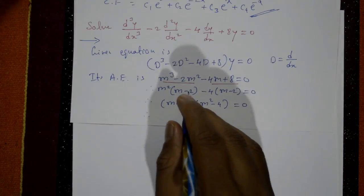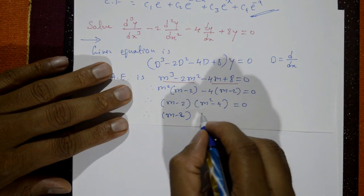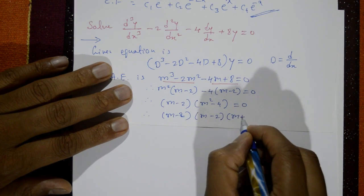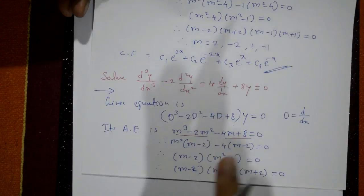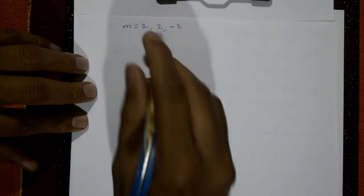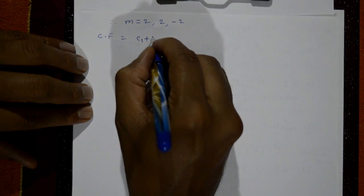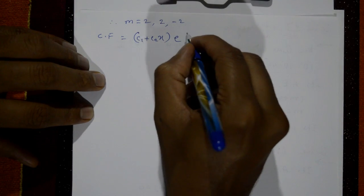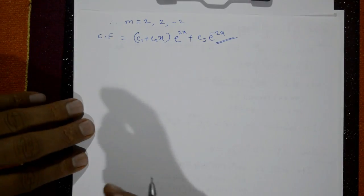Therefore, applying the a²−b² formula to (m² minus 4): (m minus 2)(m minus 2)(m plus 2) equal to 0. The roots are m equal to 2 (twice) and m equal to minus 2. Two roots are the same and the third is different. So the complementary function is (c1 plus c2·x)·e^(2x) plus c3·e^(−2x). This is the required complementary function.